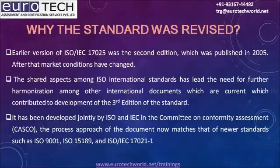Why was the standard revised? The earlier version of ISO IEC 17025 was the second edition, published in 2005. After that, market conditions changed. Shared aspects among ISO international standards led to the need for further harmonization. The third edition was developed jointly by ISO and IEC in the Committee on Conformity Assessment (CASCO). The process approach now matches newer standards such as ISO 9001, ISO 15189, and ISO IEC 17021.